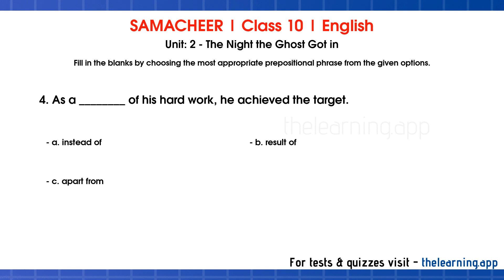Question 4: As a — of his hard work, he achieved the target. Options are: a. Instead of, b. Result of, c. Apart from. Correct answer is b. Result of.